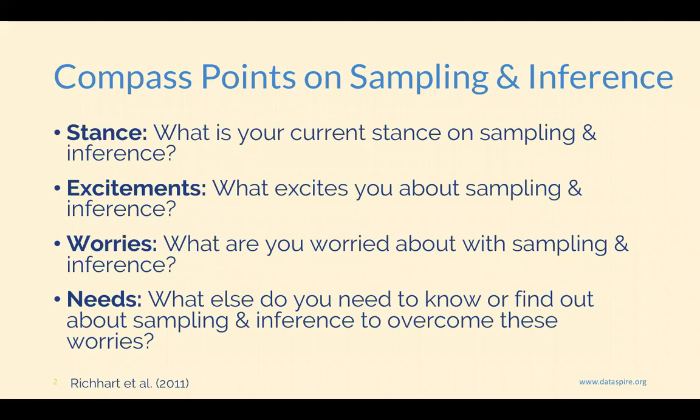Before we begin, let's do a personal reflection. You can write this down or pause the video and think about it. We're going to use the compass points of thinking about sampling and inference. There are four prompts: What is your current stance or opinion on sampling and inference? What excites you about sampling and inferences from data? What are some things you're worried about? And what else do you need to know to overcome those worries? Take a moment, pause the video, and write down or think through answers to these four prompts before moving on.